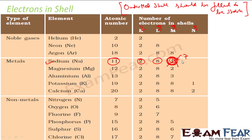Sodium has two options: either get 7 electrons or lose 1 electron. Gaining 7 electrons is difficult — nobody will give 7 electrons to it. But losing 1 electron is easy. Electron is like money for these atoms. To spend money in a shop or in a mall is easier than to earn money — same thing with electrons.